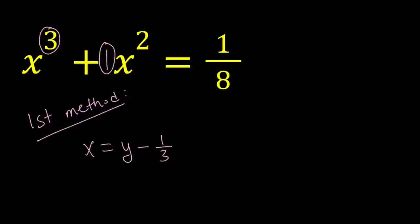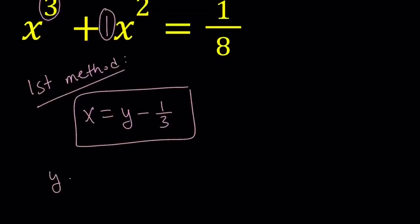There's a cubic formula. There's a quartic formula, which is quite complicated. And unfortunately, no quintic formula is available. Okay, so if you go ahead and replace x with y minus 1 third, we're going to get the following: y minus 1 third cubed plus y minus 1 third squared equals 1 over 8.